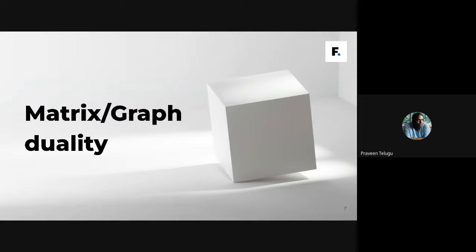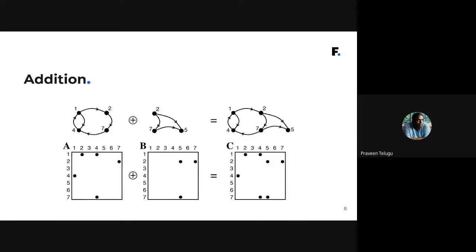Let's talk about the matrix-graph duality. Matrices are mathematical objects, and in linear algebra there are certain operations defined on them — you can add matrices, multiply matrices, transpose a matrix, and more. By duality, I mean these matrix operations correspond to graph operations. We can use this correspondence to build graph algorithms in the language of linear algebra.